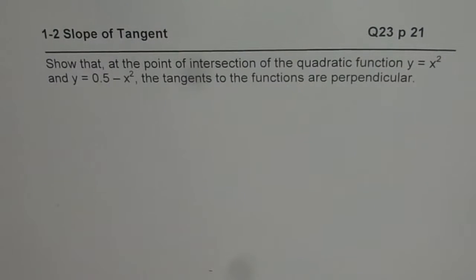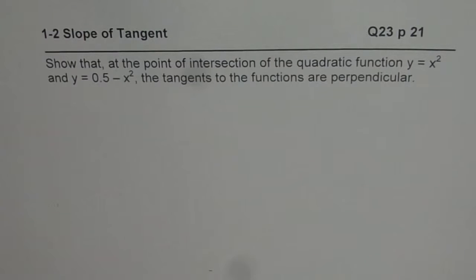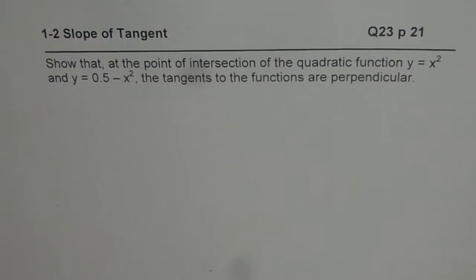I'm Anil Kumar and in this video we'll solve question number 23, page 21. As per the request of my students, I will like them to understand the logic, and then you can pause the video and solve the question. The question is: show that at the point of intersection of the quadratic functions y equals x squared and y equals 0.5 minus x squared, the tangents to the functions are perpendicular.